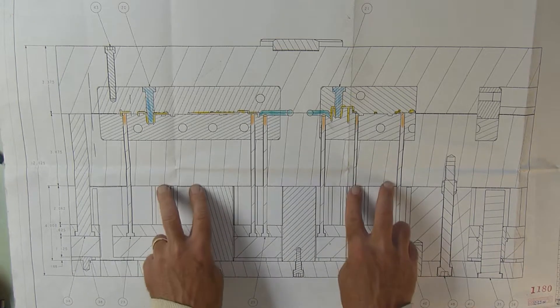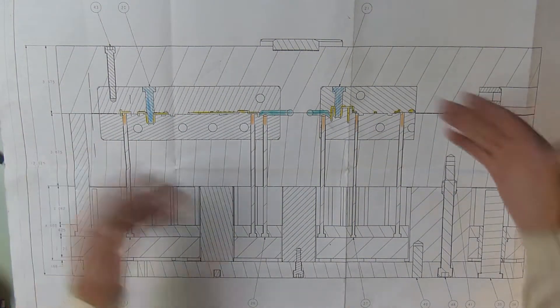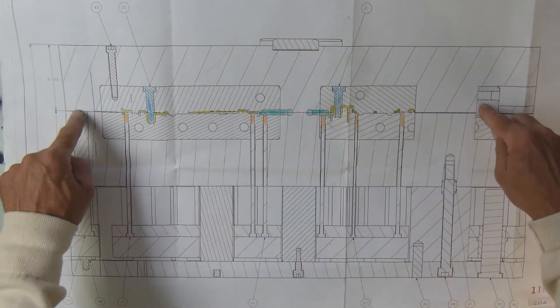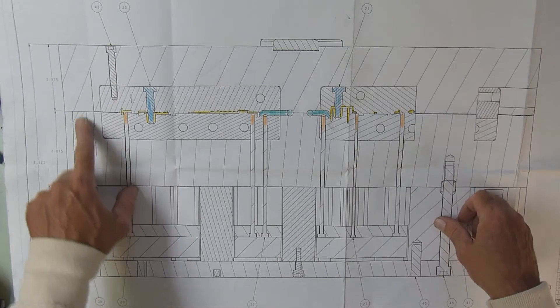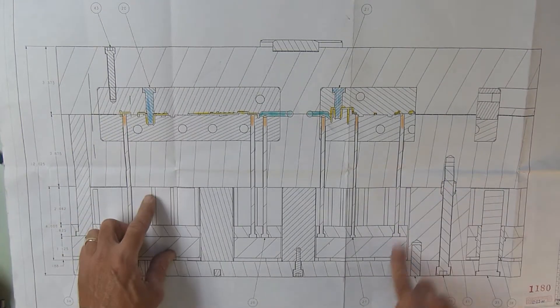That'll push the part off, rinse and repeat. The mold will shut, these pins—the front half will push this pin down—the four return pins push these ejector plates back to this home position.